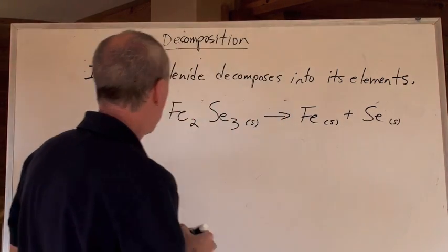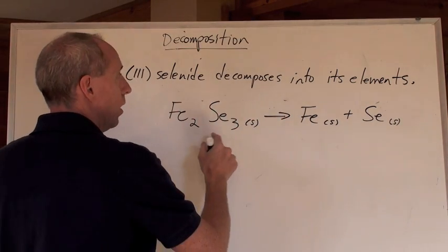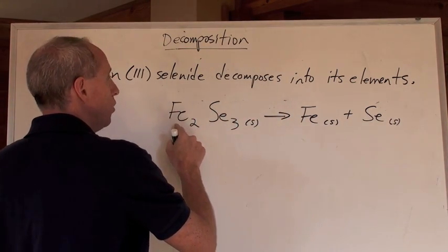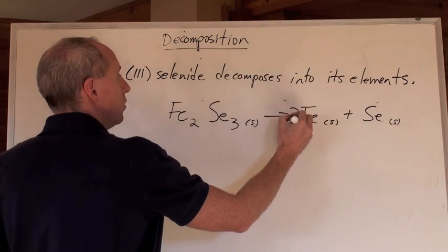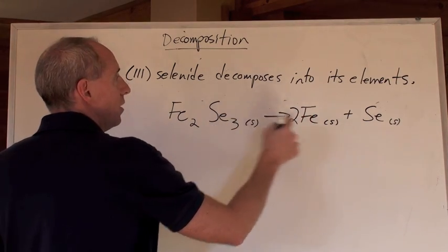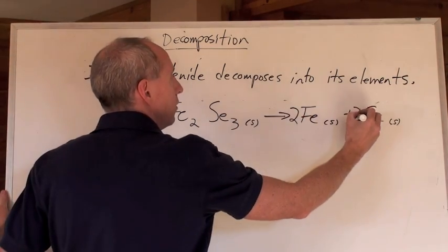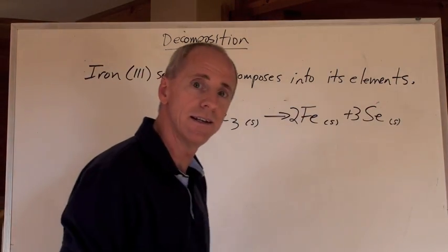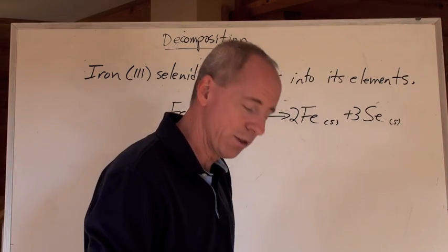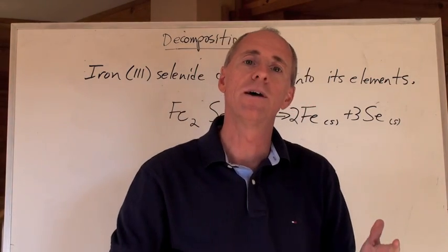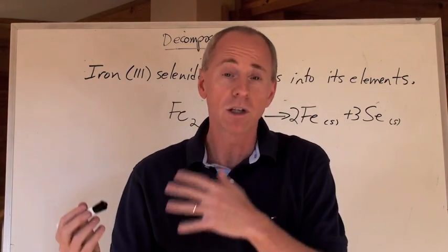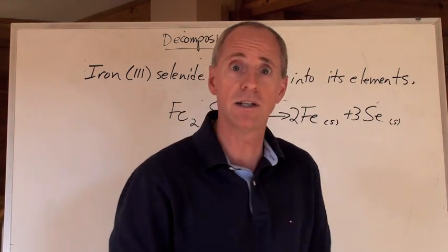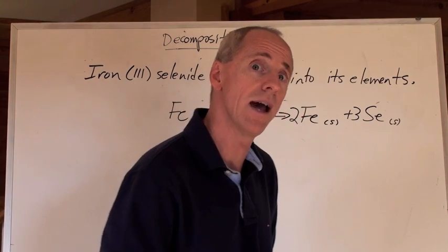How do you balance that reaction? It looks like it's going to be straightforward. Two Fe's — two. Three Se's — three. And that's it. There's the decomposition of an ionic compound into its elements.